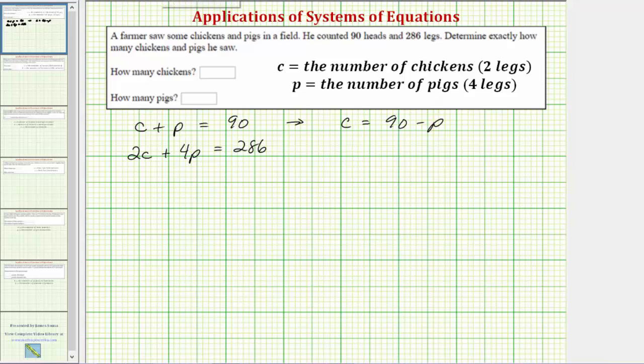Now that we solved the first equation for c, we can perform a substitution for c in the second equation. We will now substitute 90 minus p for c in the second equation, which will give us one equation with one unknown. So performing the substitution, we'd have two times the quantity 90 minus p plus 4p equals 286.